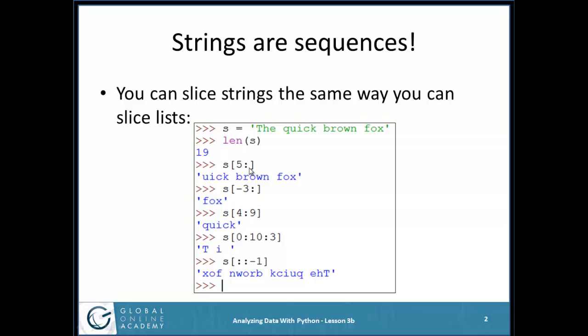So S[5:] means start with position 5 and go to the end. 0, 1, 2, 3, 4, 5. So I get from the U in Quick through the end of the string. Quick Brown Fox. If I do S[-3:], that says start at position negative 3 and go to the end of the string. Here's negative 1, negative 2, negative 3. So that just gives me Fox.